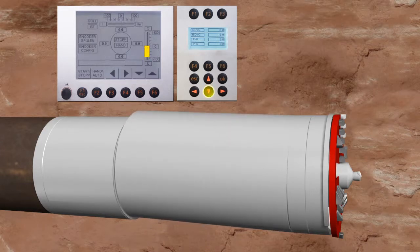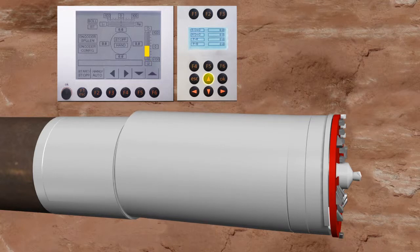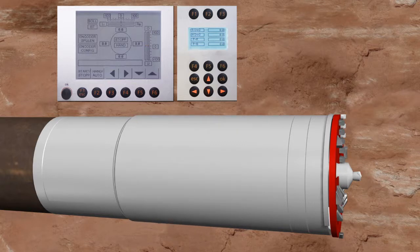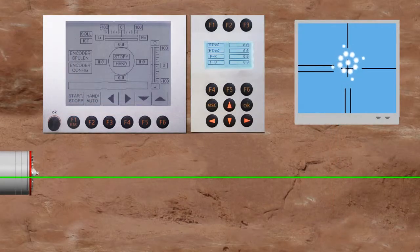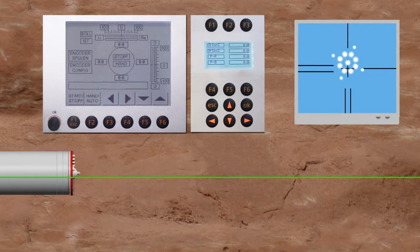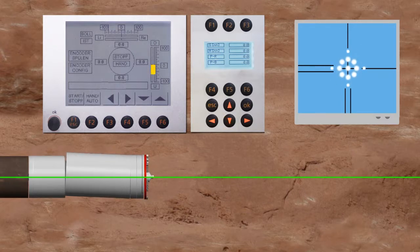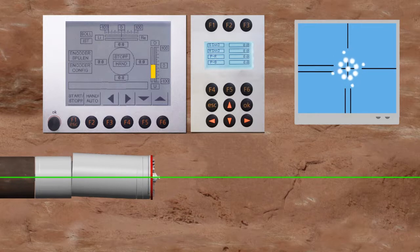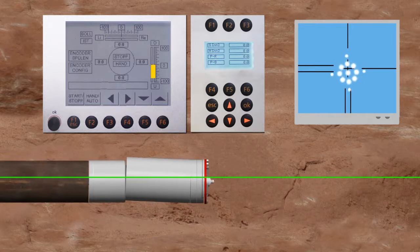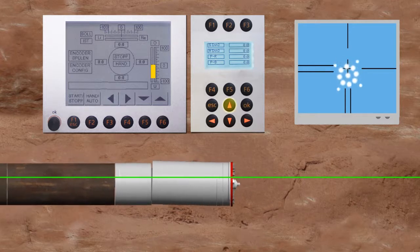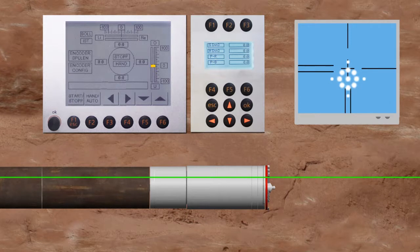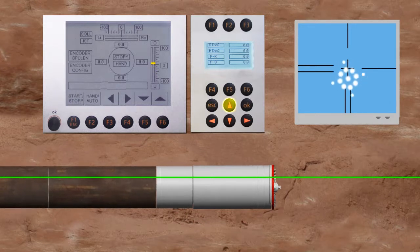The operator can move the steering pipe of the front steer with the help of the operation panel to correct any deviation from the intended line or level. If any deviation from the intended alignment is visible on the monitor, the operator changes the position of the steering pipe to correct the deviation while the jacking procedure continues. The inclined position of the front steer creates a reactional force from the surrounding soil to achieve the steering correction.